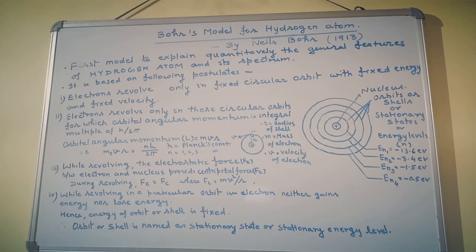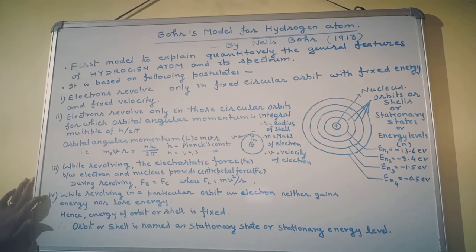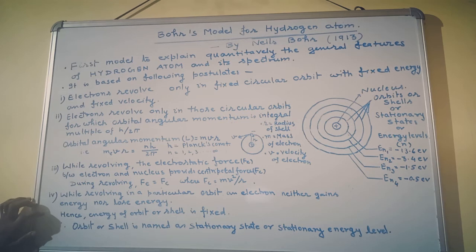Fourth postulate: while revolving in a particular orbit, an electron neither gains energy nor loses energy. Hence, energy of orbit or shell is fixed. Therefore, orbit or shell is named as stationary states or stationary energy level.